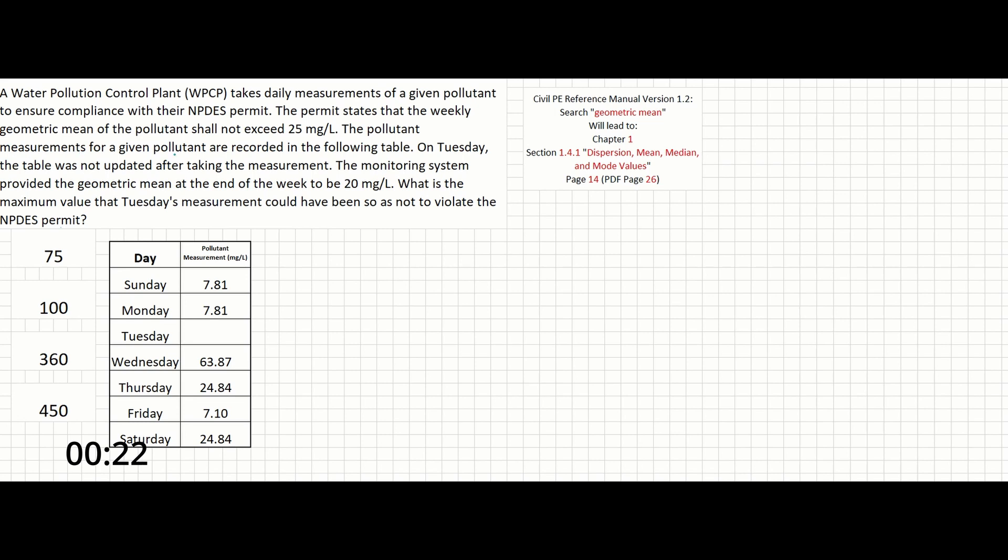The pollutant measurements are recorded in the following table. On Tuesday, the table was not updated after taking the measurement. The monitoring system provided the geometric mean at the end of the week to be 20 milligrams per liter. What is the maximum value that Tuesday's measurement could have been so as not to violate the NPDES permit?